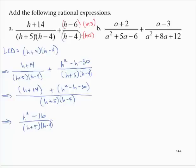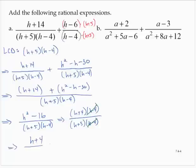It looks like we can't do anything further, but remember that h² − 16 factors as (h + 4)(h − 4), and the denominator is (h + 5)(h − 4). Removing the common factor of (h − 4), we are left with (h + 4) / (h + 5).